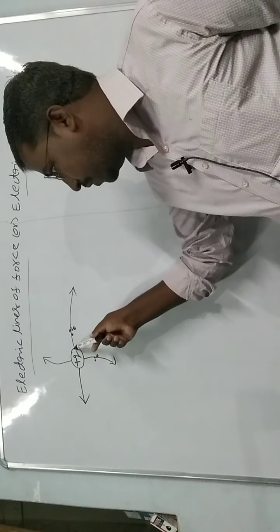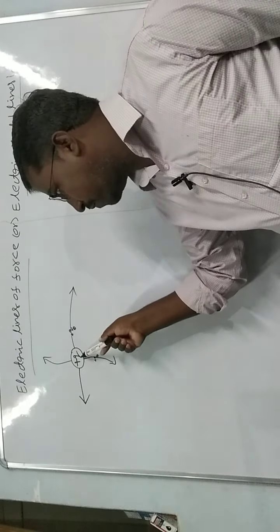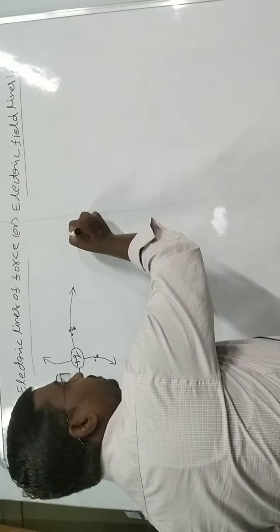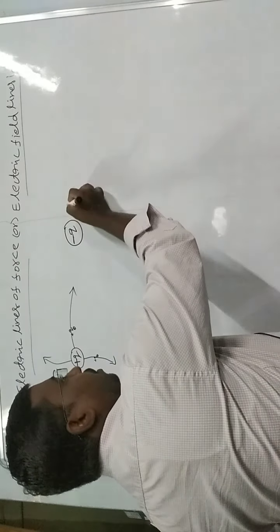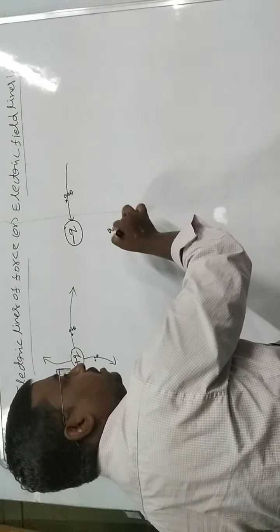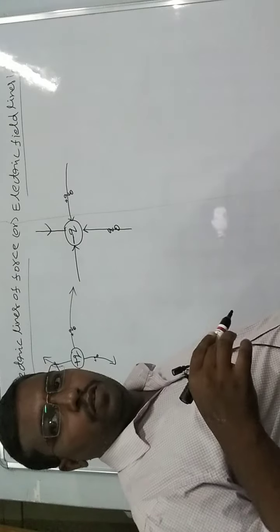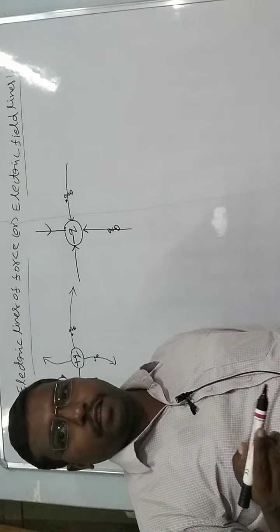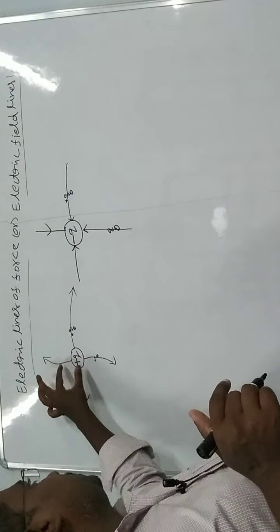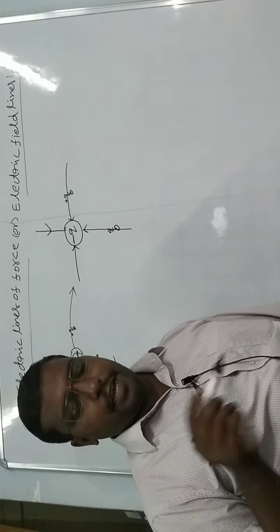In case we take a plus Q charge, the field lines move away from it — meaning these field lines start from plus Q, the positive charge. In case we take a negative charge, that is minus Q, and release a plus Q-naught charge near it, it will be attracted toward minus Q. Similarly, placing Q-naught at different points, it is attracted each time. So due to minus Q charge, electric field lines arise towards the negative charge. Therefore: electric field lines start from positive charge and end at negative charge.